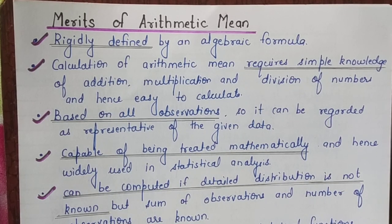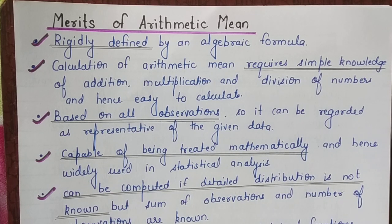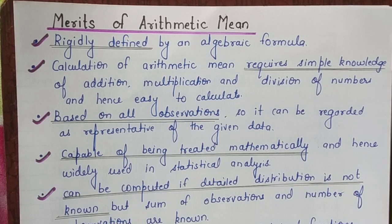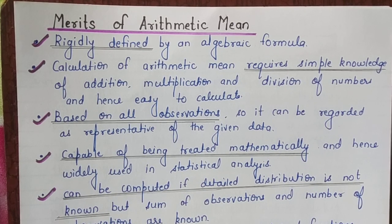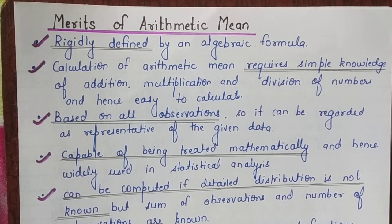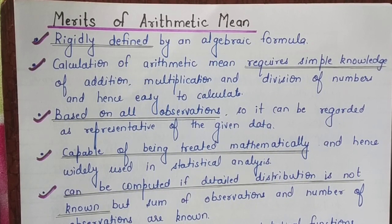Merits of arithmetic mean. The very first merit is that it is rigidly defined by an algebraic formula. The mean figure is not estimated or guessed — it has not been calculated by estimation. There are specific formulas for all different series: individual series, discrete series, continuous series, and different methods. So we calculate it using a formula rather than a mere estimate. This is no guesswork; it is rigidly defined.